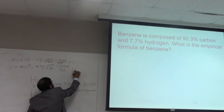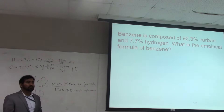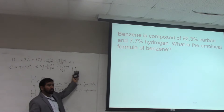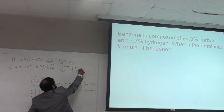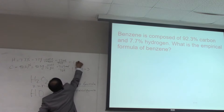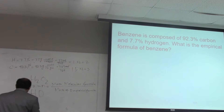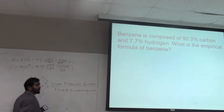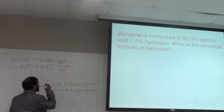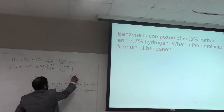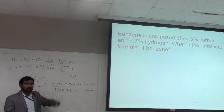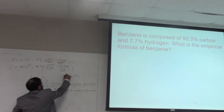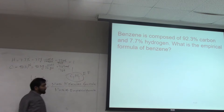Dividing each by the smallest gives approximately 1 for both, so you take the nearest integer. But if you get 1.5, you're in the middle — you must multiply all mole ratios by a number that makes the decimal an integer. In that case multiply by 2: 1.5×2 = 3, 1×2 = 2. Here both ratios are 1:1, so the empirical formula is CH.